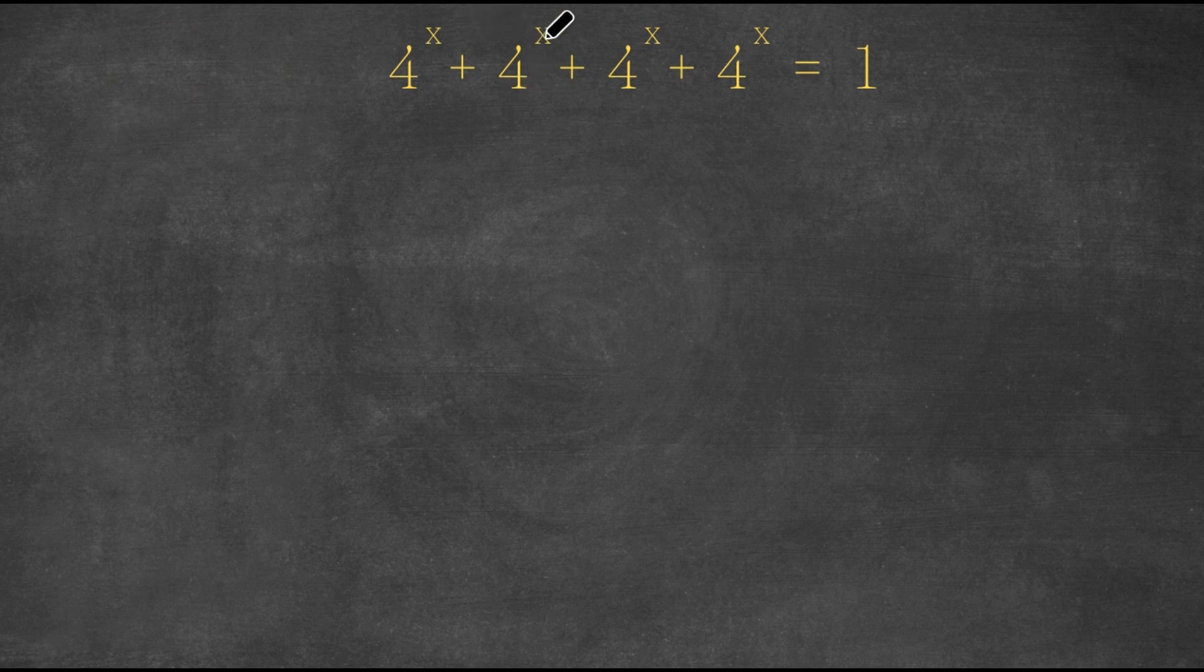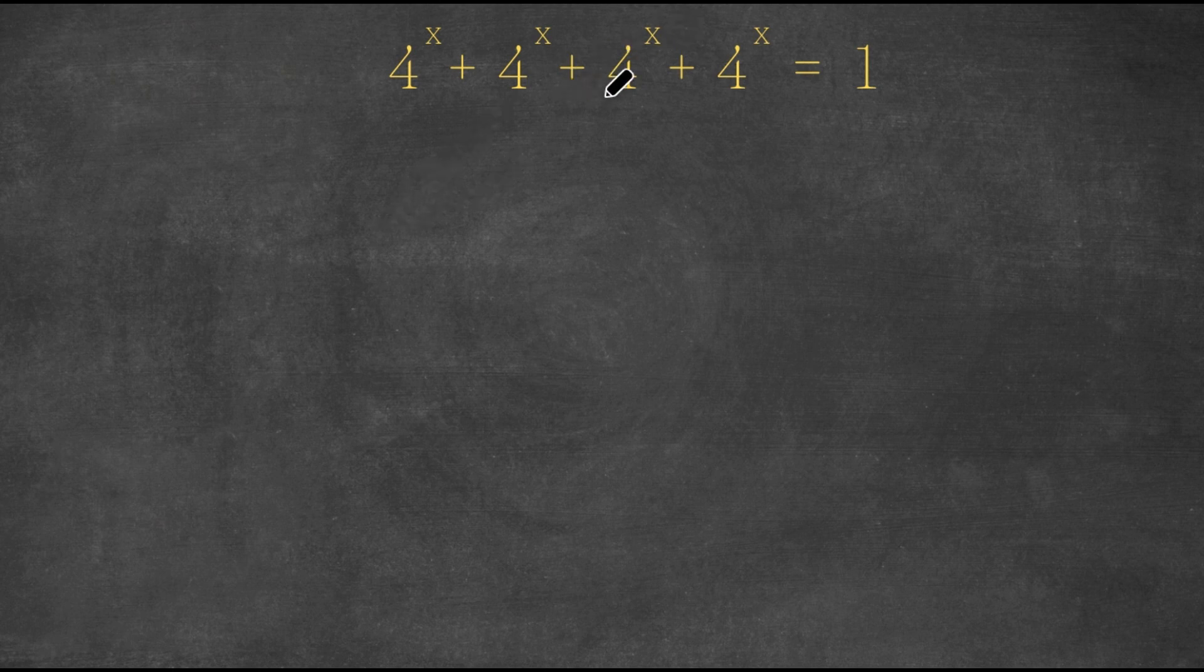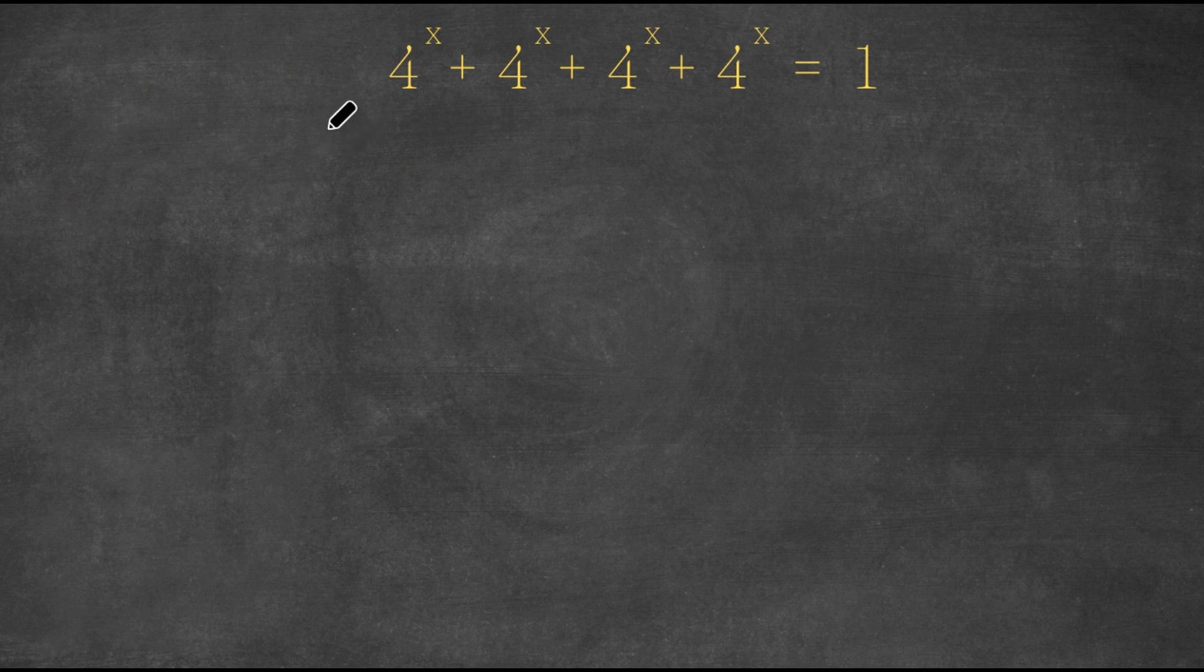We have 4^x + 4^x + 4^x + 4^x = 1. Because I have so many 4^x's on my left-hand side, I'm going to factor out 4^x.